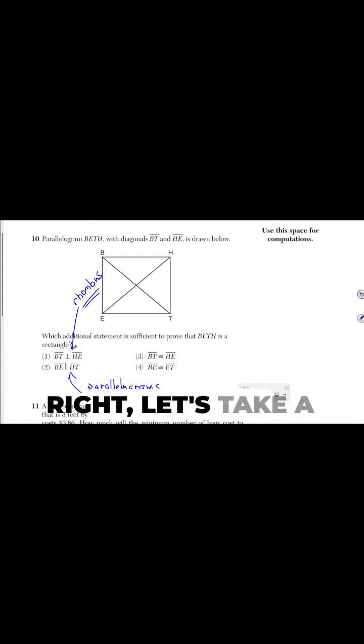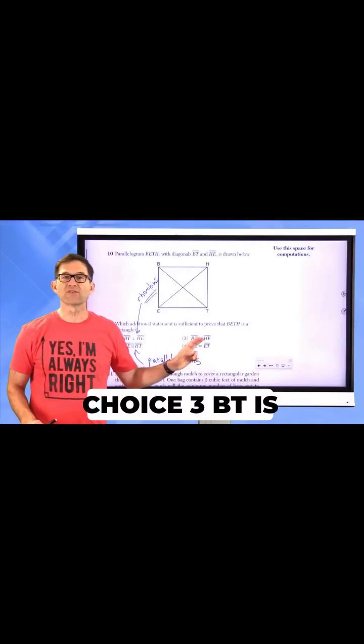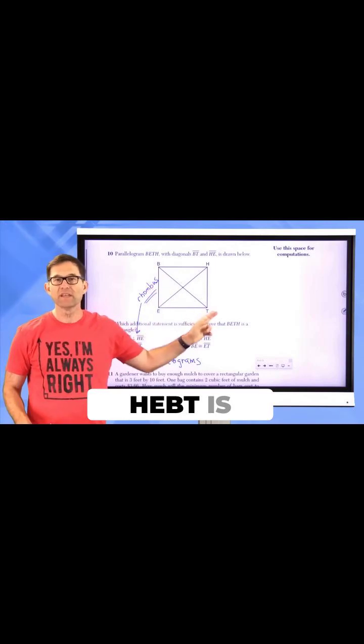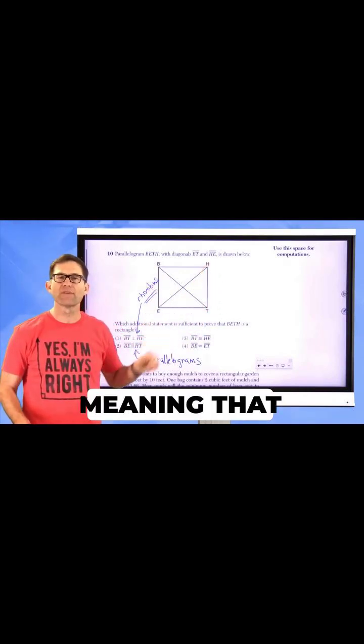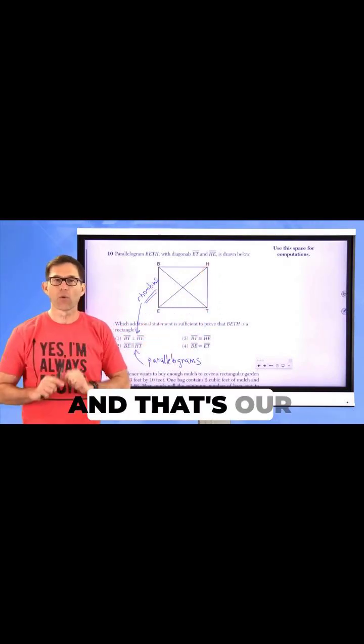Let's take a look at choice three. Choice three, BT is congruent to HE. BT is congruent to HE, meaning that they're the same length. And that's our winner.